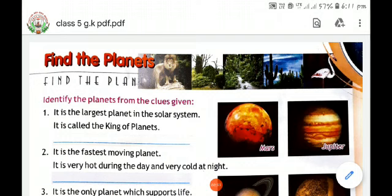Now see the first question. It is the largest planet in the solar system. It is called the king of planets. It's Jupiter. Second one, it is the fastest moving planet. It is very hot during the day and very cold at night. It's Mercury.